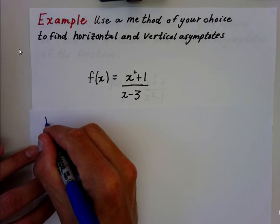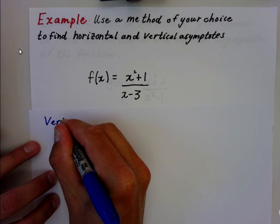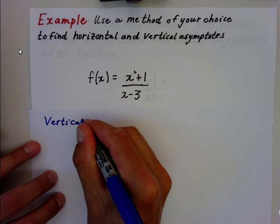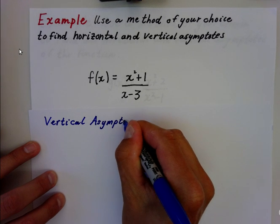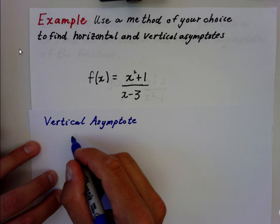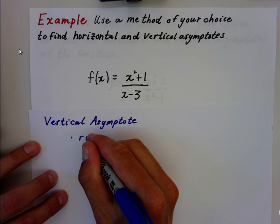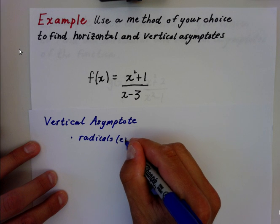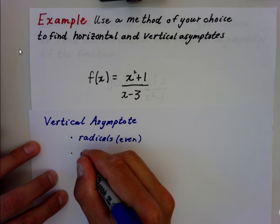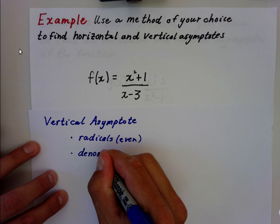So I'm going to start with the vertical asymptote. The two things you have to worry about with vertical asymptotes are radicals—and they need to be even—and the denominator. Those are the two things you have to look for.